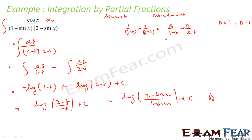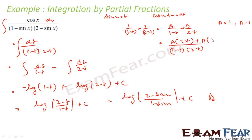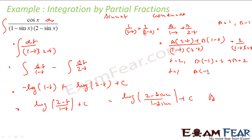Let me show you how I found the values of A and B. From 1/((1 - t)(2 - t)) = A(2 - t) + B(1 - t), I put t = 2: B(-1) = 1, so B = -1. Then I put t = 1: A(1) = 1, so A = 1. Once I have A and B, I converted the expression into simpler form and got the answer.